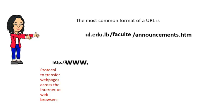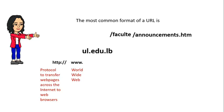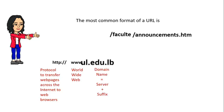www stands for World Wide Web. ul.edu.lb is the domain name. It is composed of a server and a suffix. The server here is ul — it's where the item is located.